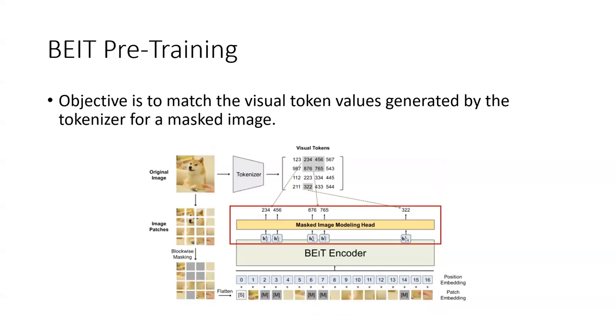Once we have our tokenizer from the VQ-KD training depicted before, we are now able to generate accurate visual tokens given our original image. We split the original image into image patches, perform blockwise masking, flatten these image patches, and have position embedding and feed them into a BEIT encoder. Using a masked image modeling head we ask our BEIT encoder to predict the visual token at the masked position. If you notice at position two it's masked, so 234 is the prediction of the BEIT and this is matched with the prediction of the tokenizer. This is the pre-training step.